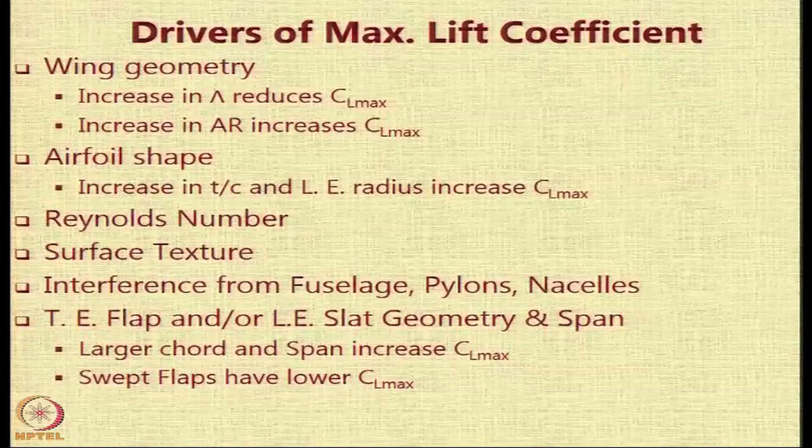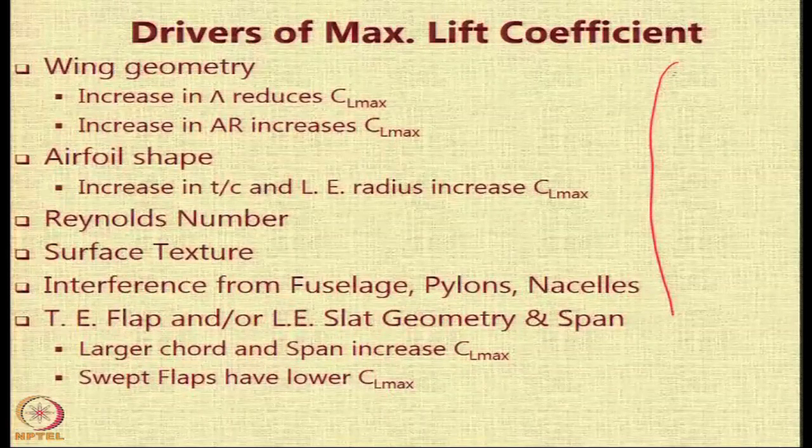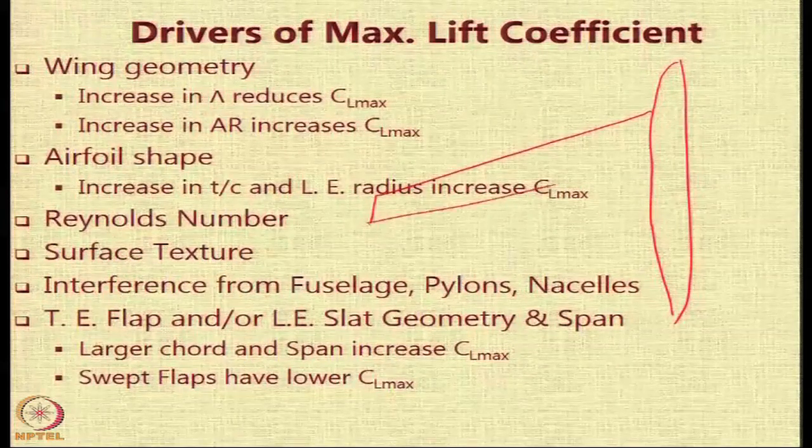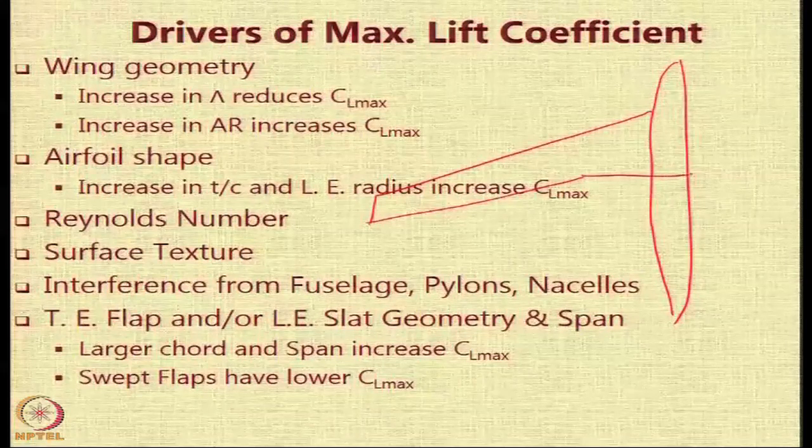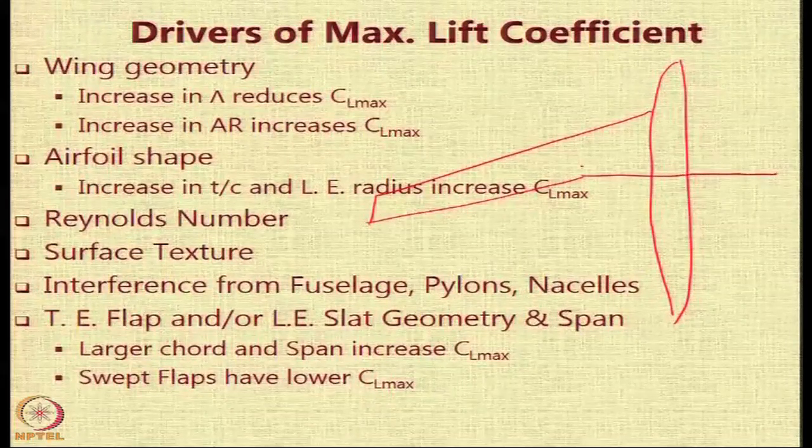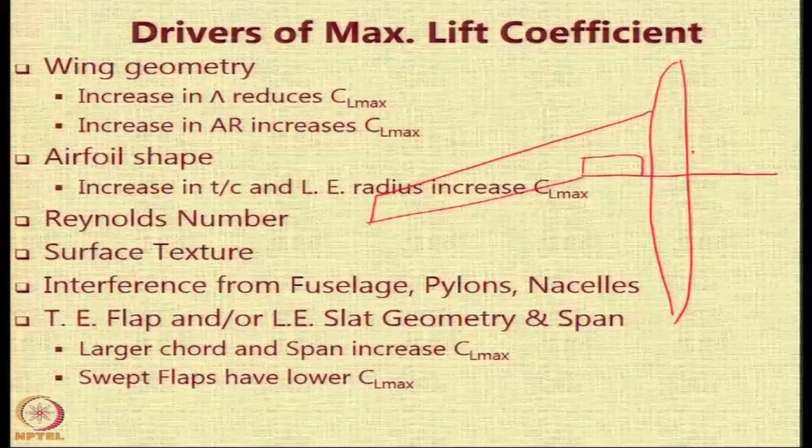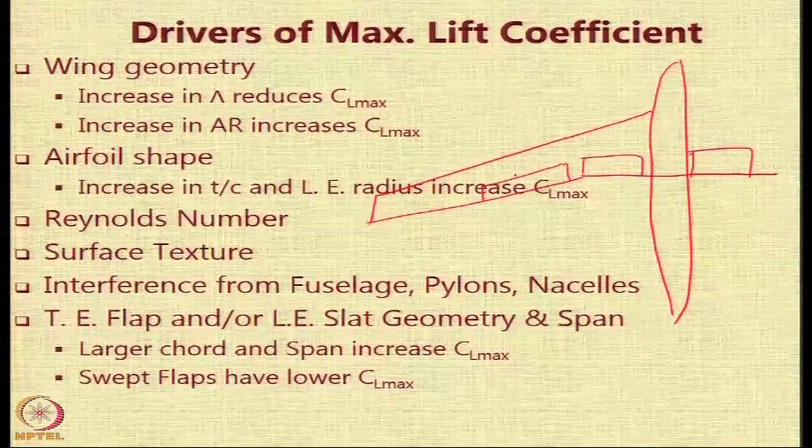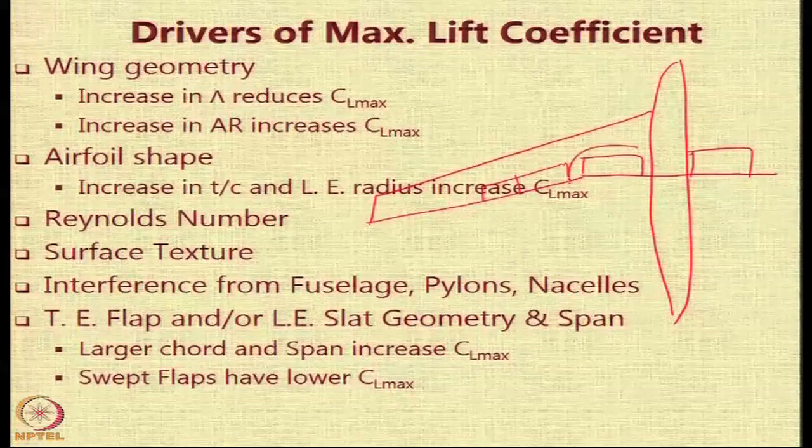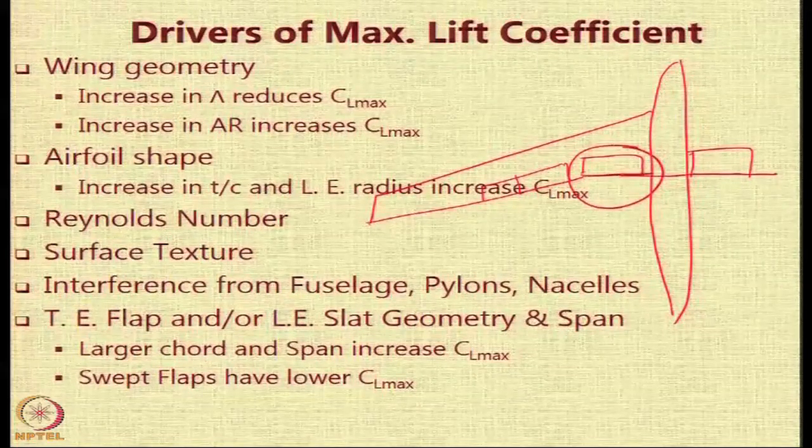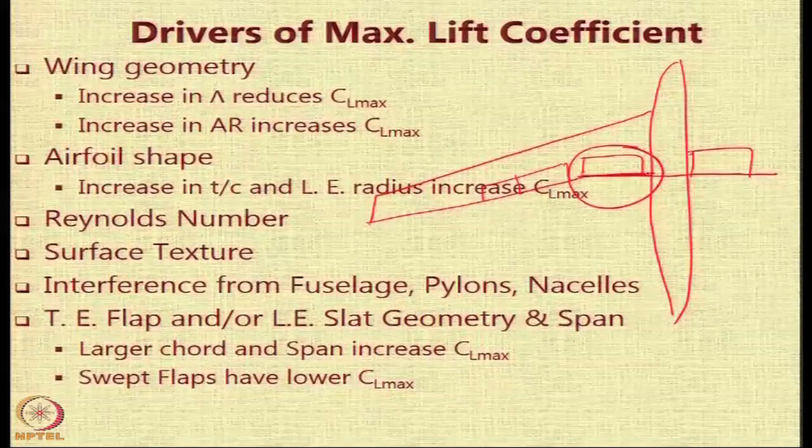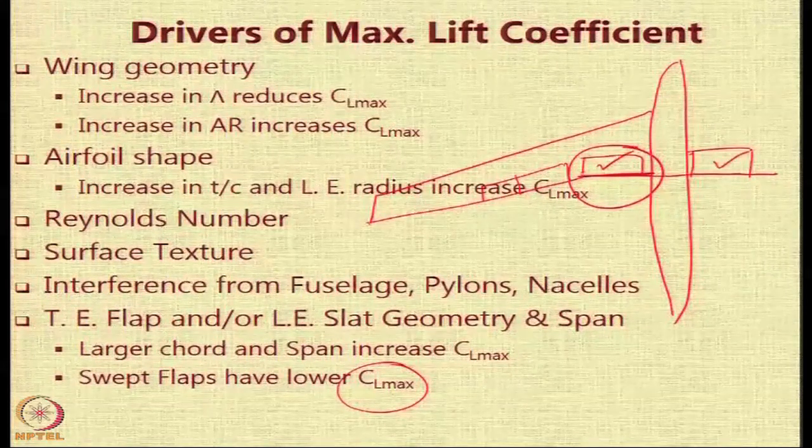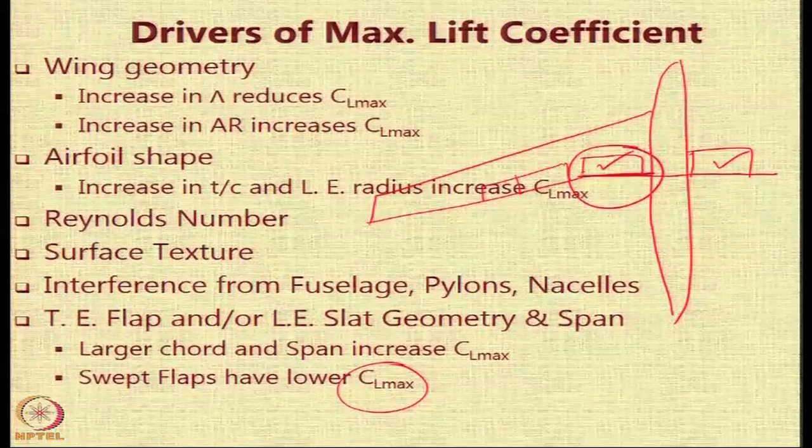This is one reason why in many transport aircraft you will see a typical configuration of the wing would be that you have the wing like this it will have a sweep but in the central portion you will have flaps which are going to be straight flaps and these tend to be the large chord flaps and then you have the smaller chord flaps which could also be in parts. The reason why we go for this kind of a flap with a trailing edge sweep 0 is because swept flaps have a lower C L max value. At least this flap and this portion of the flap the inboard flaps are going to have higher values of C L max.